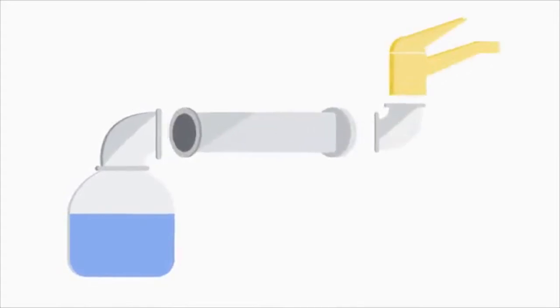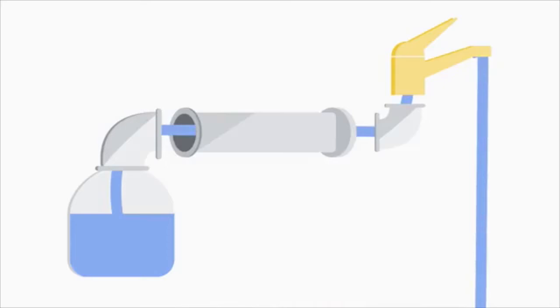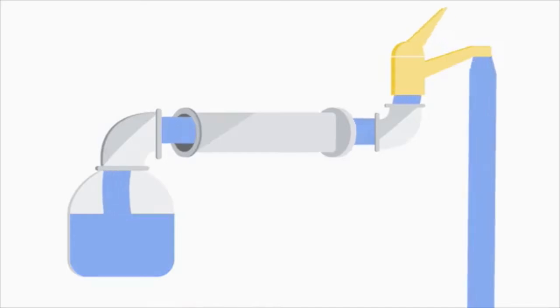Have you ever plugged one of your devices into a wall outlet and fried your device? To understand electricity, let's use the example of water pipes. Our sinks have a faucet connected to a pressurized water tank — when we turn on the faucet, water comes out. This is sort of how electricity works. When we plug an appliance into a wall outlet and turn it on, a flow of electricity comes out. The higher the pressure, the more water there will be. When it comes to electricity, we refer to this pressure as voltage.